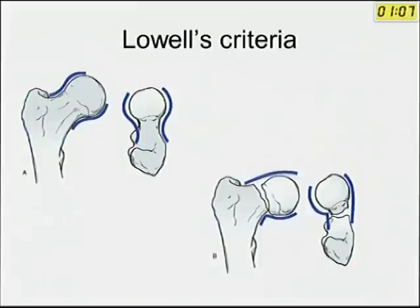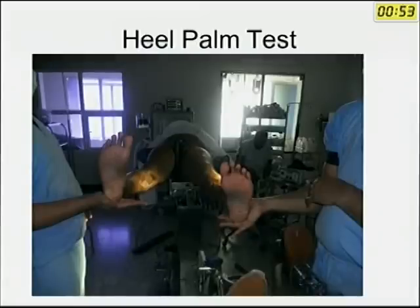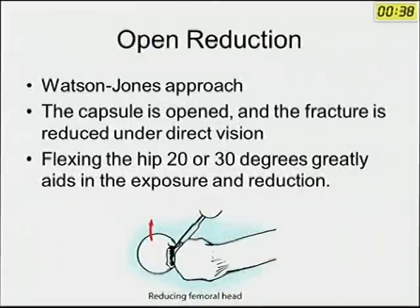The Leadbetter method involves circumduction and abduction. After reduction, accuracy must be assessed by Lowell's criteria and Garden's alignment index. The heel-palm test should be checked to confirm neutral position is maintained. Indications for open reduction include an unsatisfactory position after a second or third attempt in patients younger than 65 years, and early displacement following internal fixation.